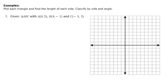For this problem, it says to plot each triangle, find the length of each side, and then classify by side and angle. The first thing we're going to do is plot the triangle so we can see how the sides are laid out. Point A is (0, 5), point B is (4, -1), and point C is (-3, 3).